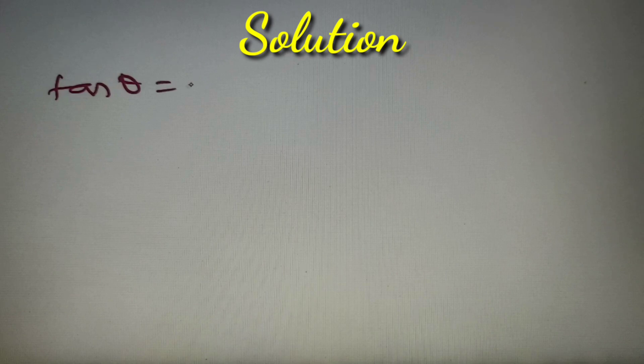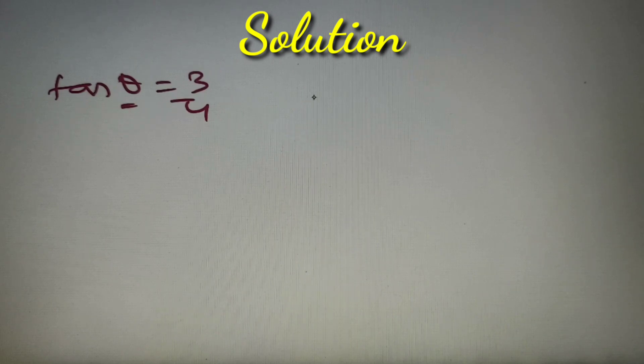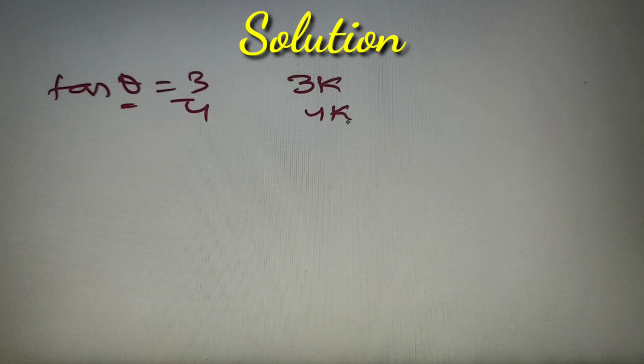According to our last step we have got the value of tan theta as 3 by 4. So we can say that when theta gives us the maximum result, at that point tan theta must be 3 by 4. So we can take the perpendicular as 3k and base as 4k because tan theta is basically the ratio of perpendicular and base.